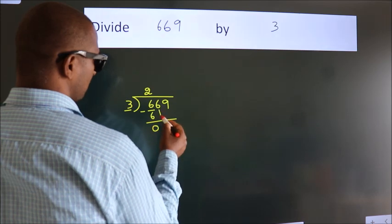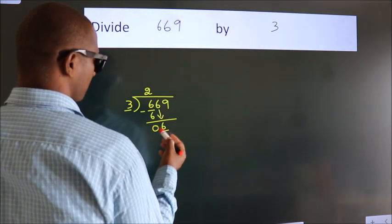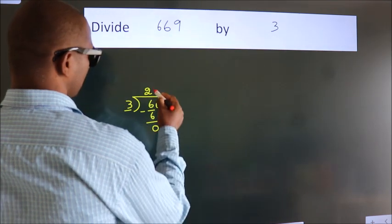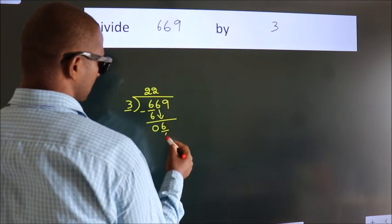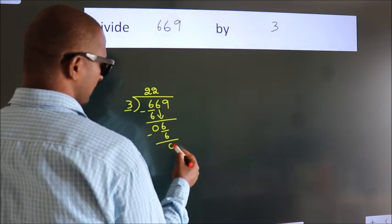After this, bring down the beside number, so 6 down, so 6. When do we get 6? In the 3 table, 3 times 2 is 6. Now we subtract, we get 0.